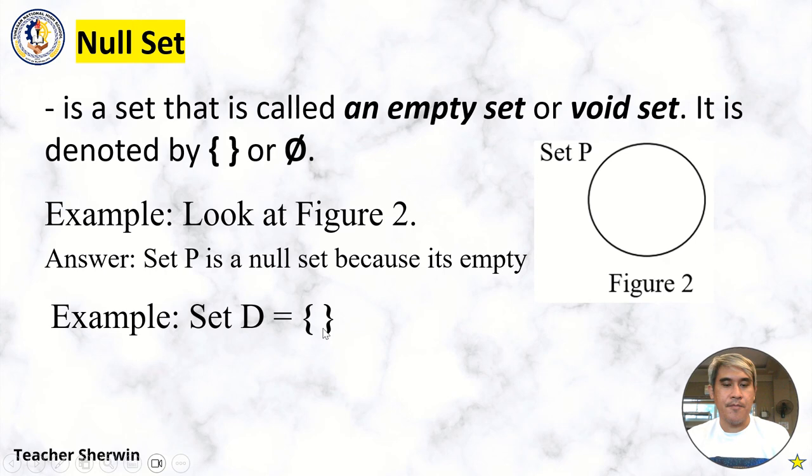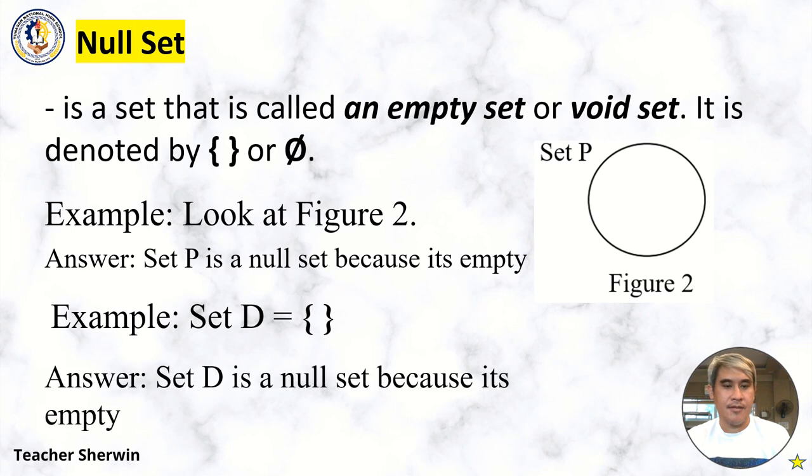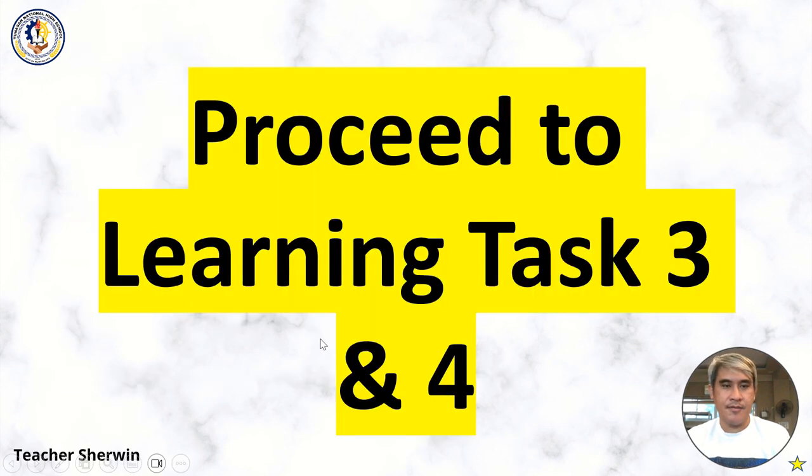Example: Set D = { }. We have brackets that are empty and do not have any elements. Set D is a null set because it's empty. Let's proceed to Learning Task 3.